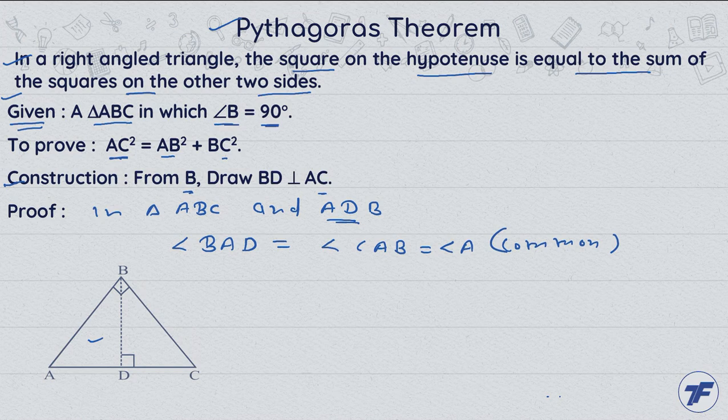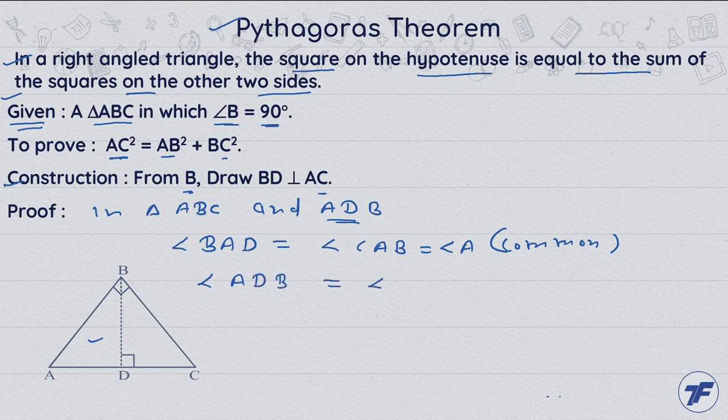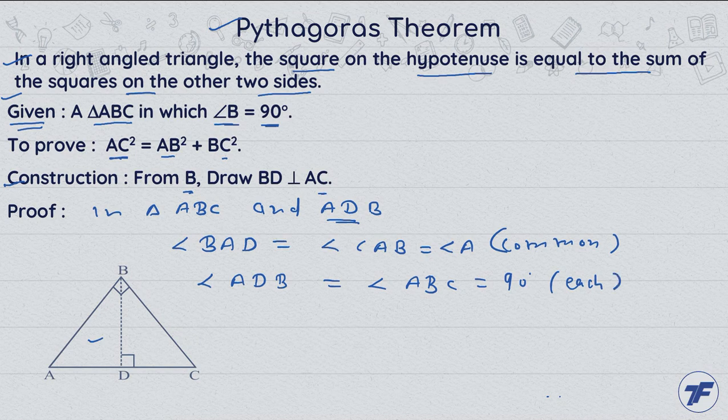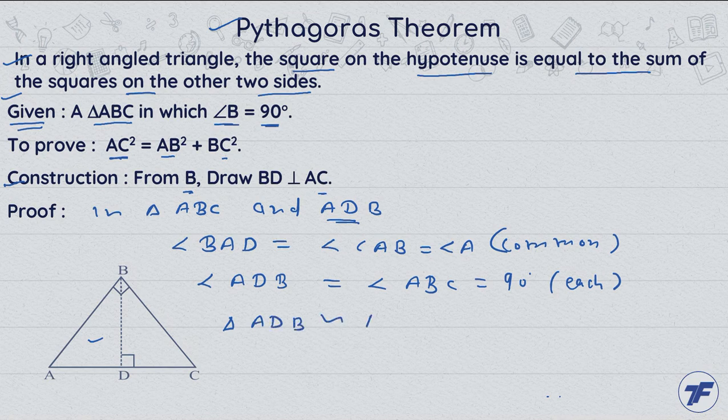Again, angle ADB equal to angle ABC equal to 90 degrees each. Now we can say triangle ADB similar to triangle ABC.